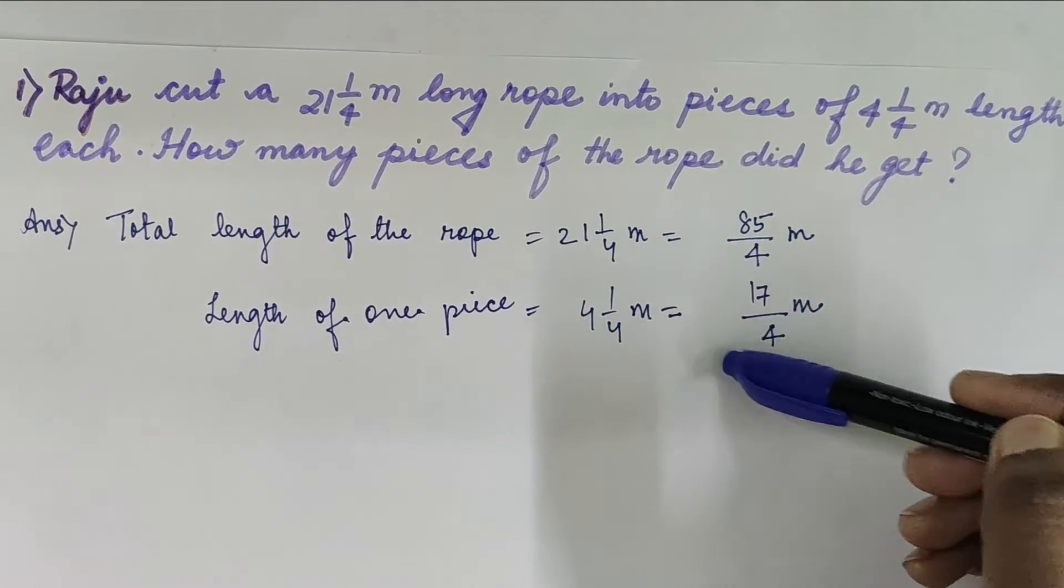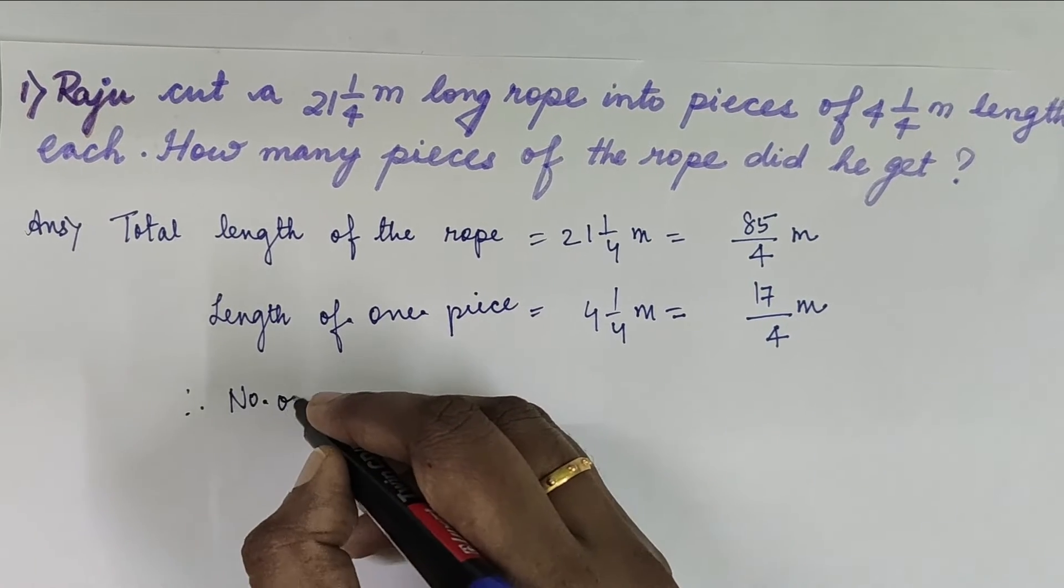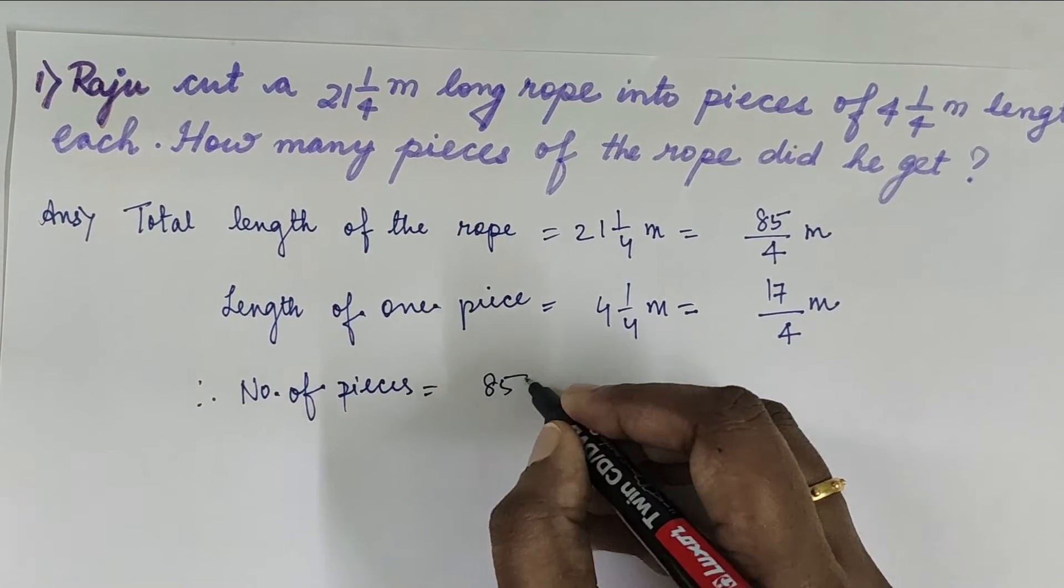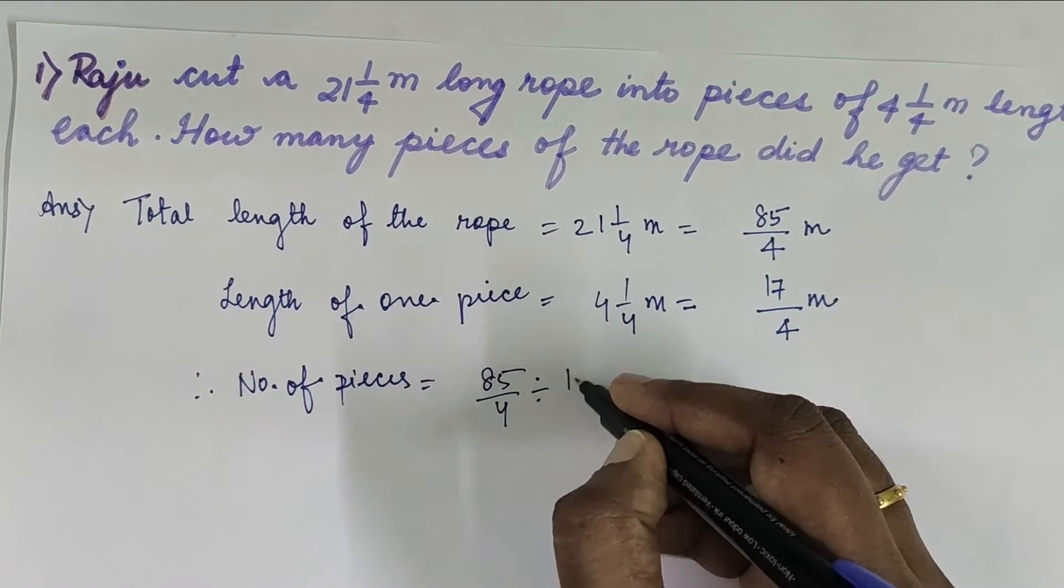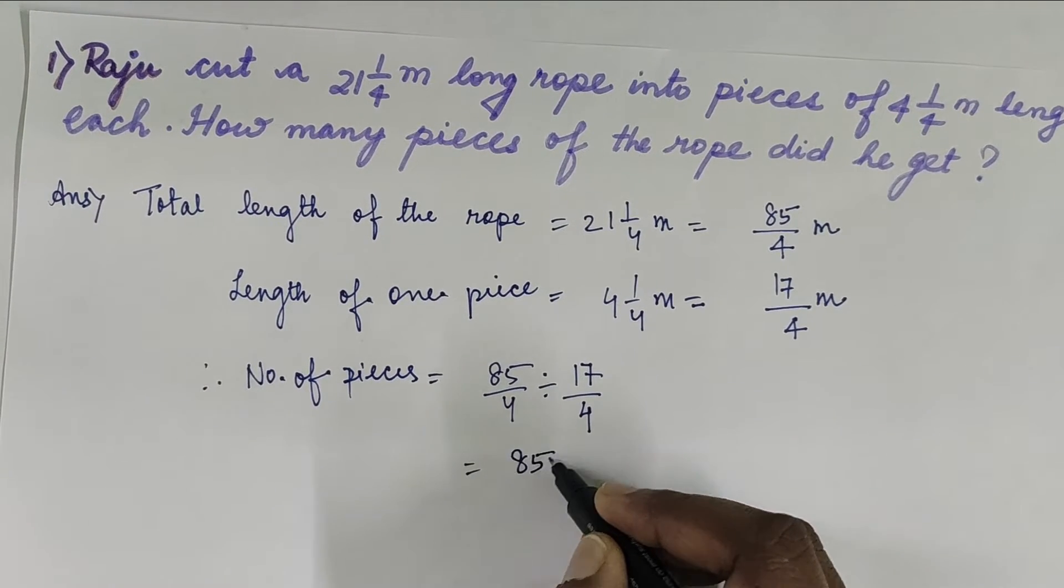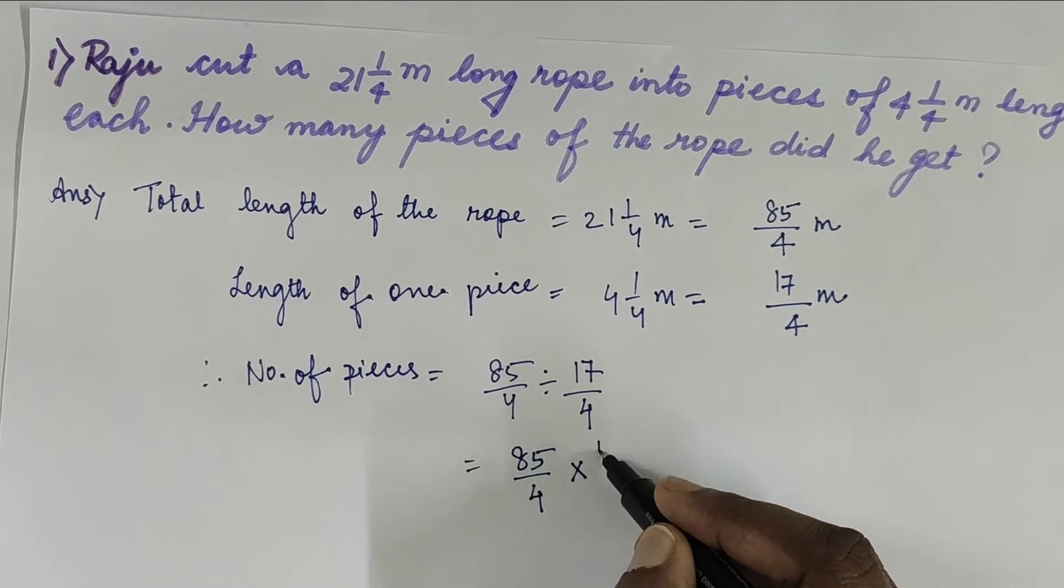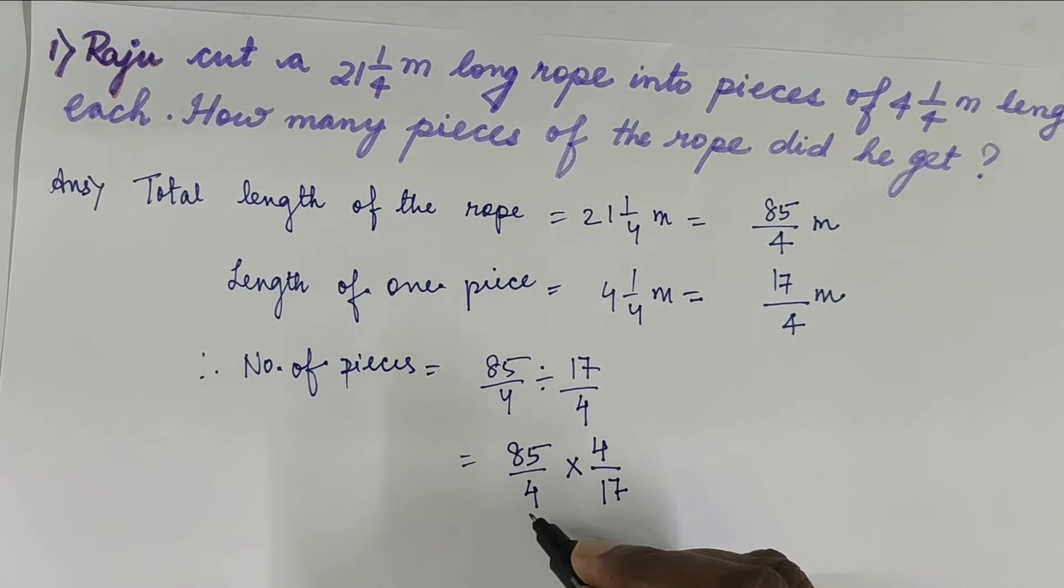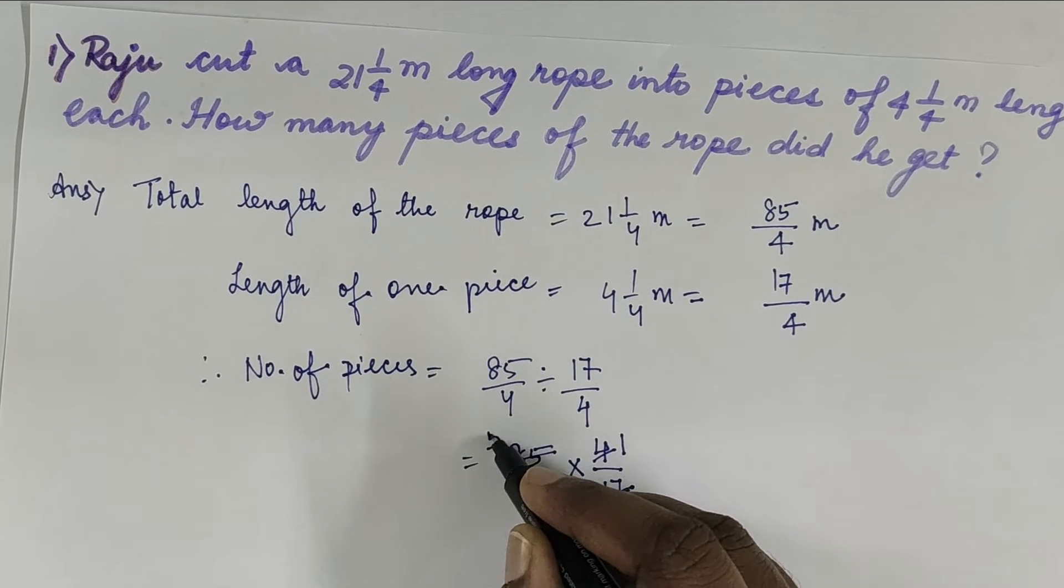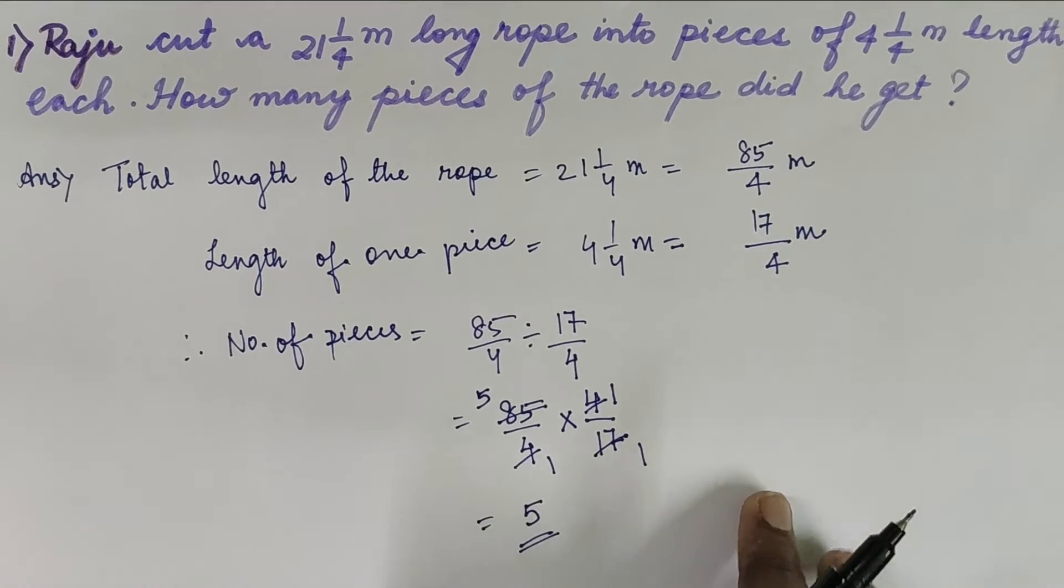So how many pieces of the rope did he cut? When the total length is given and one piece length is given, we have to obviously divide. Therefore, number of pieces he has cut will be equal to 85/4 divided by 17/4. When I solve it, as I already told you in the division module, the division changes into multiplication and this becomes reciprocal so 4/17. The 4s cancel, 17 ones are 17, fives are 85. How many pieces is the answer? Answer will be five pieces.